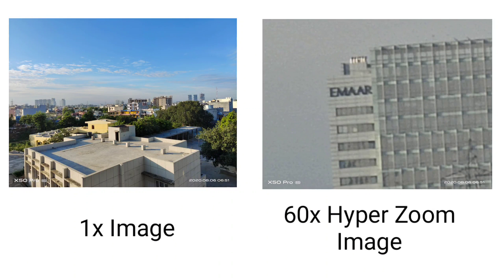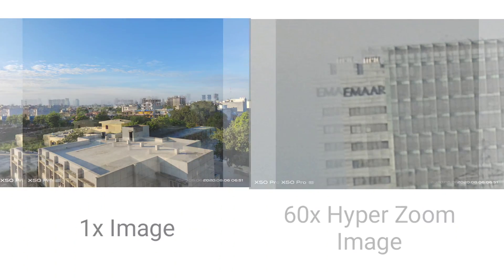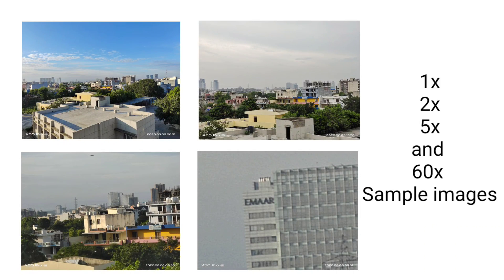On the left side we have an image at 1x and on the right side we have the image at 60x hyper zoom. Here you can see images captured at 1x, 2x, 5x, and 60x respectively.